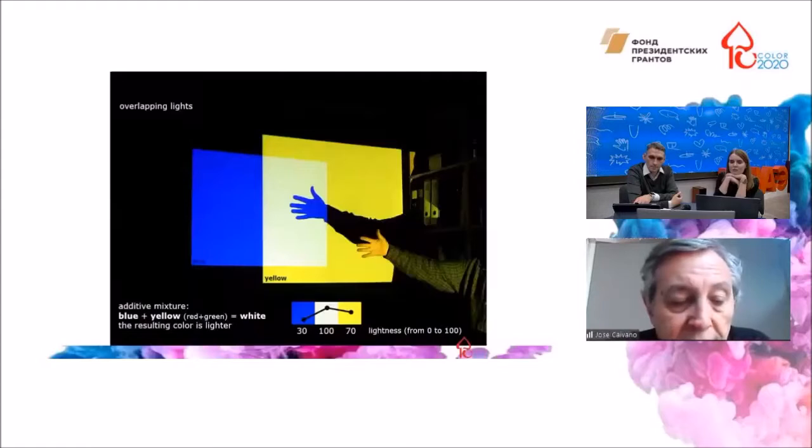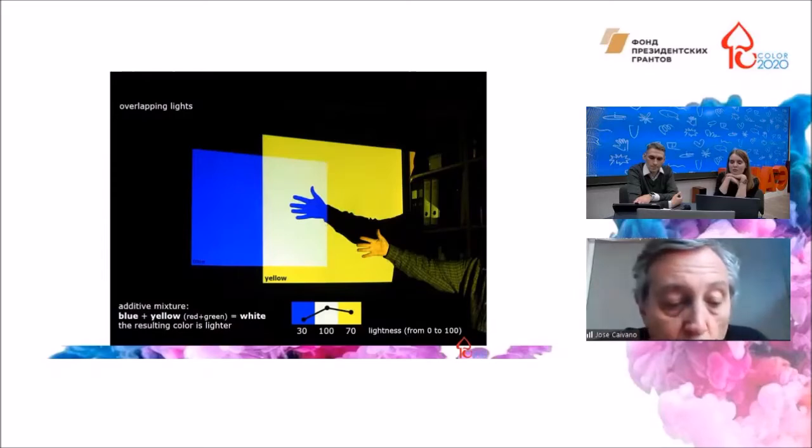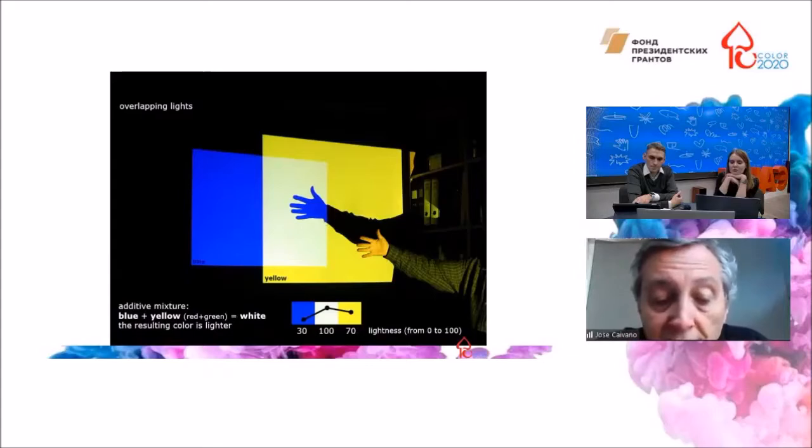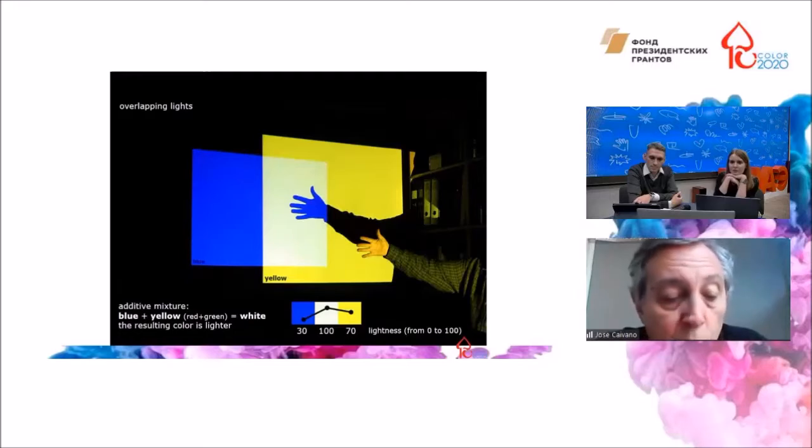The thesis assumed in the additive mixture seems to verify in all cases, since the mixture works by adding light and the result is always a higher lightness. A yellow with 70% lightness plus a blue with 30% lightness gives white, ideally with 100% lightness.